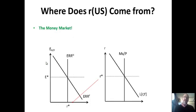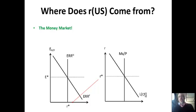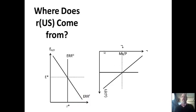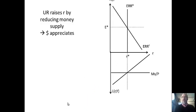Where does the home interest rate come from? It comes from the money market. The liquidity function—real money demand—shows that if interest rates go down, money demand goes up; and if income Y rises, the whole demand curve shifts right, leading to higher interest rates. Since both the money market graph and the forex graph share the interest rate on an axis, we can rotate the money market graph to line them up. The intersection of money supply and money demand gives us the expected rate of return at home.